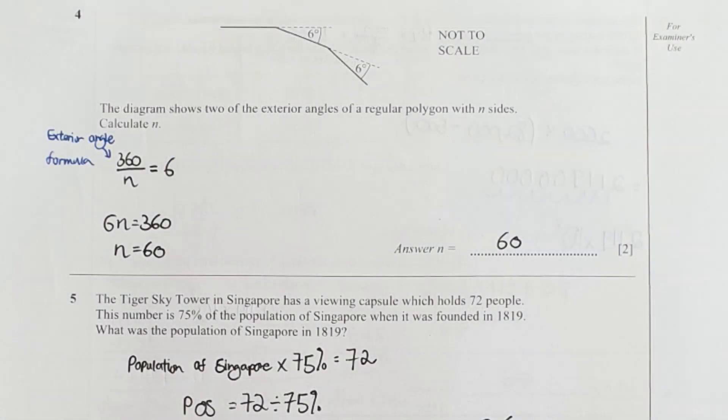Question four, pretty straightforward. Take note that we are using the exterior angle formula, which is 360 divided by n equals to 6. So your n here, n equals to 360 divided by 6, n value is 60.